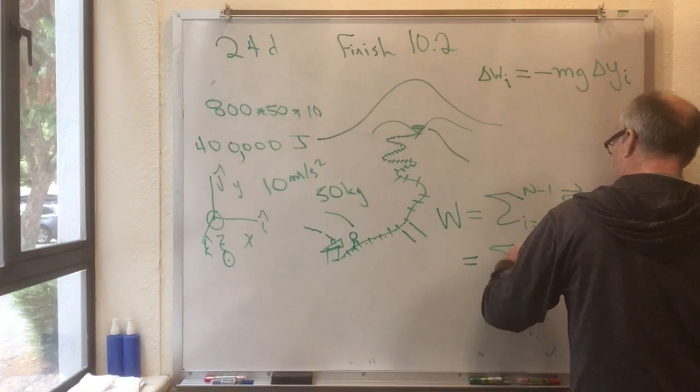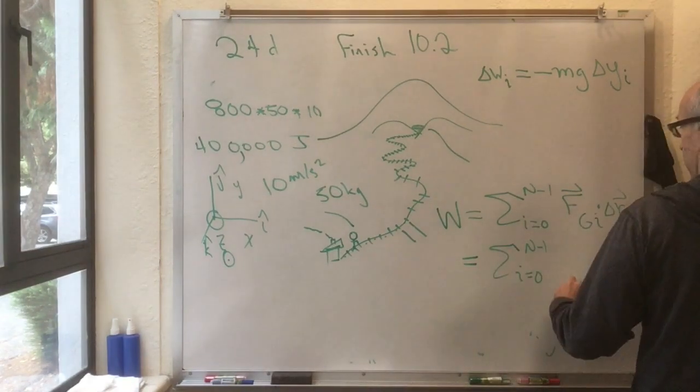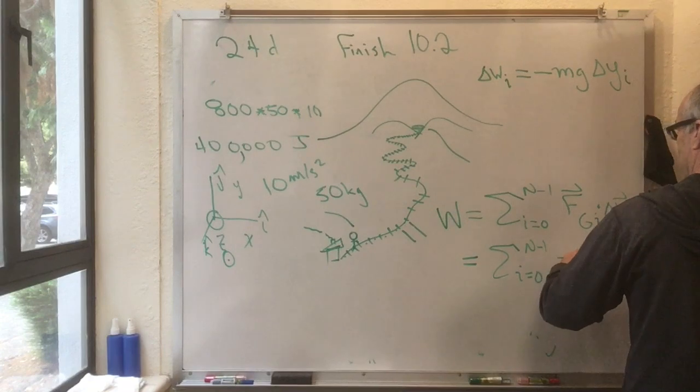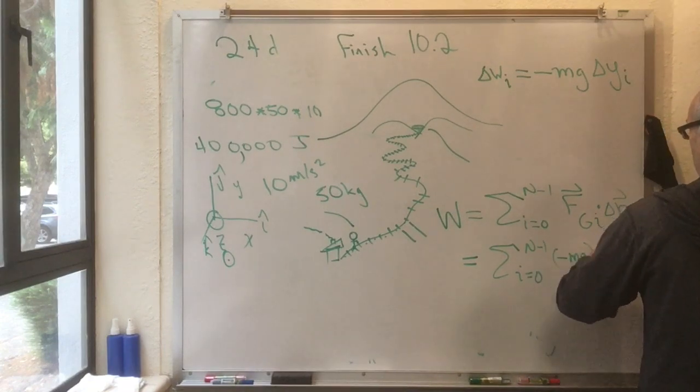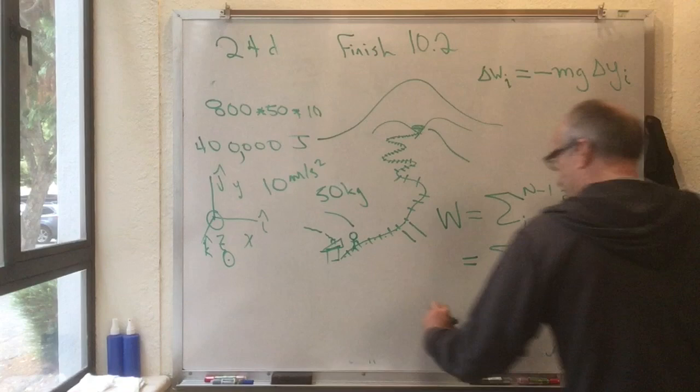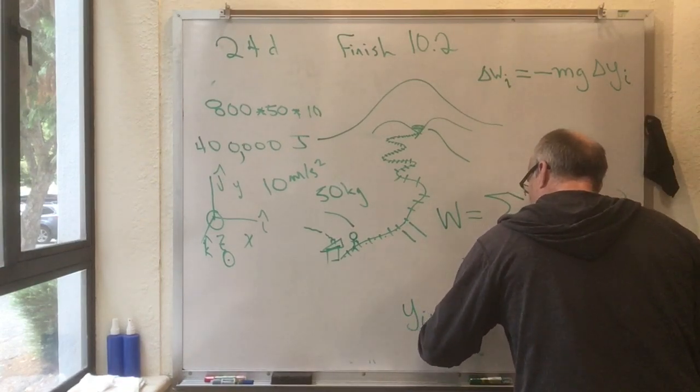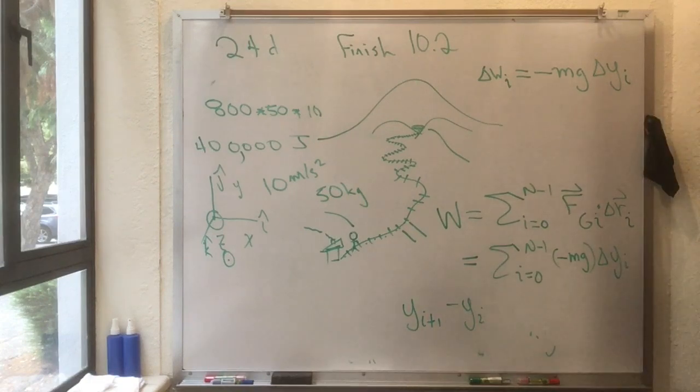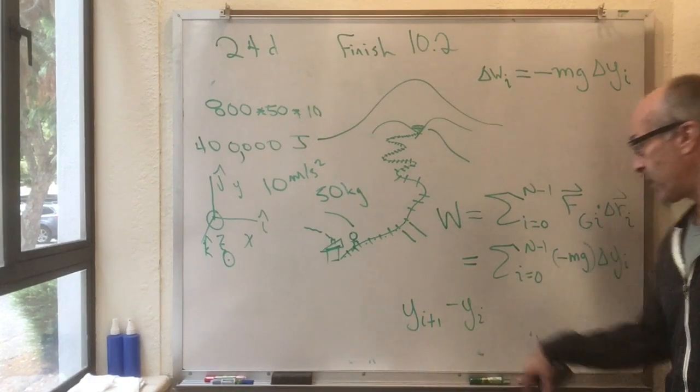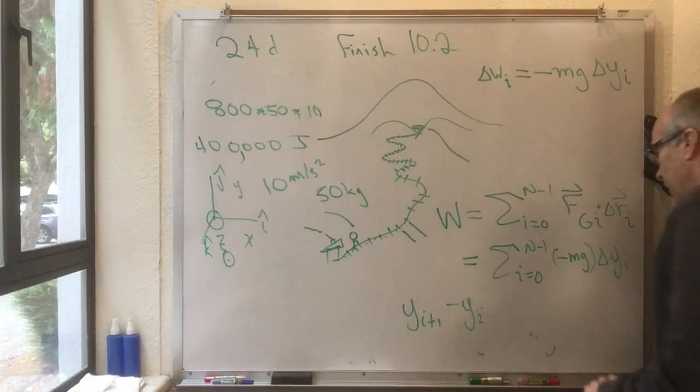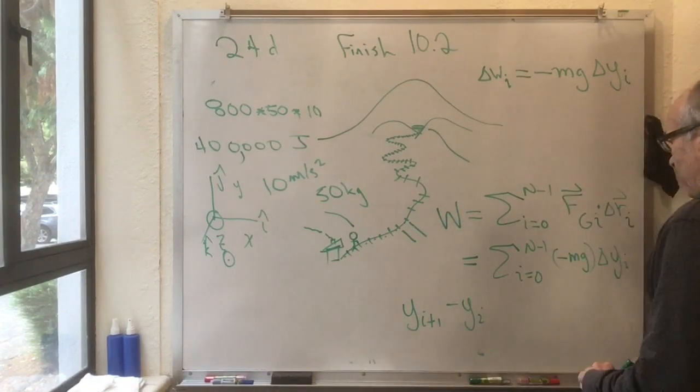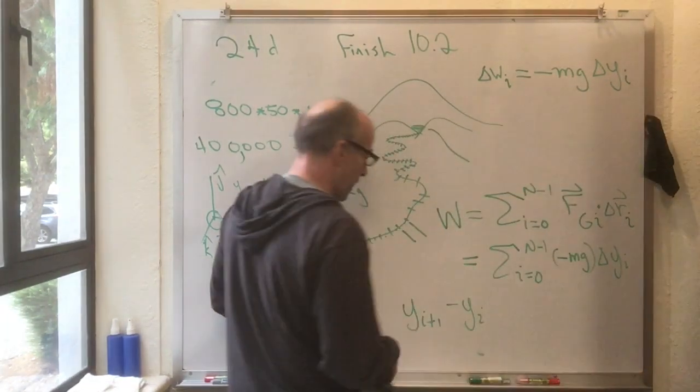That means that this sum here simplifies, this becomes sum i equals 0 to n minus 1 of minus mg delta y sub i. Now, delta y sub i is y at i plus 1 minus y at i. So, what you can see here is you do this sum, let's try to kind of write it out.